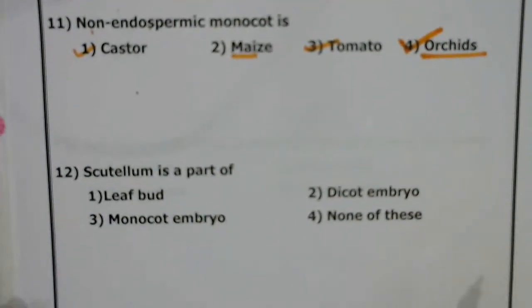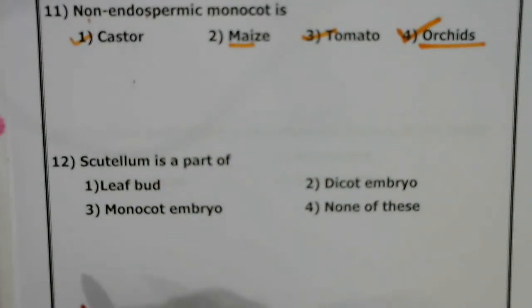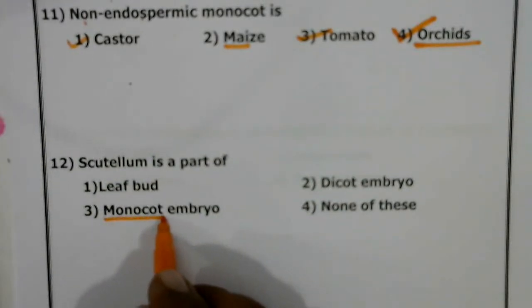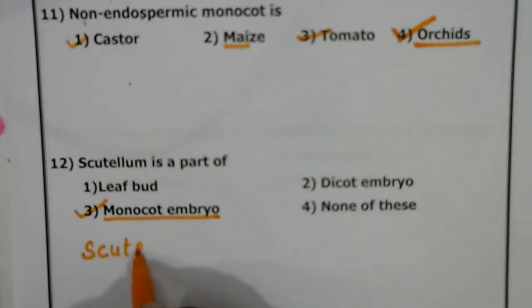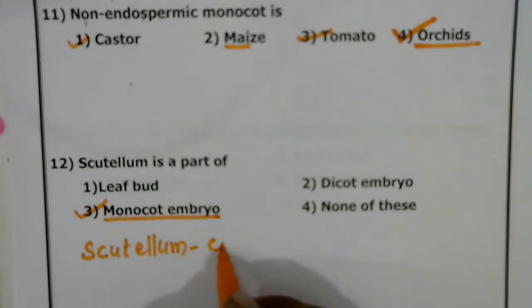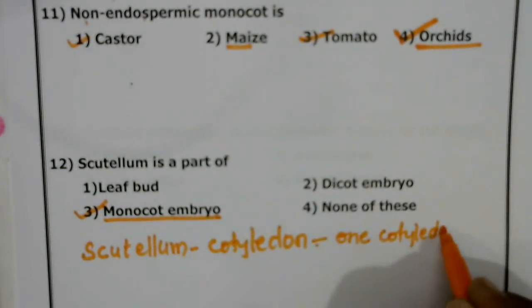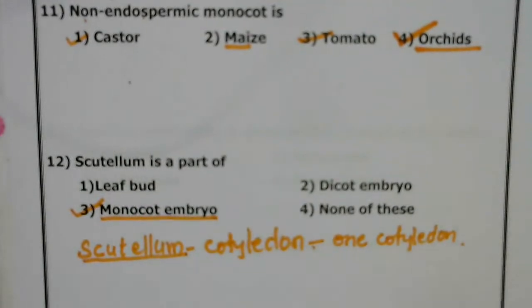Scutellum is a part of the monocot embryo. It is also called the cotyledon. In the monocot embryo, only one cotyledon is present — that is the monocot. That cotyledon is called the scutellum.